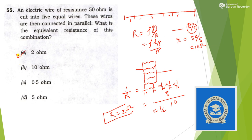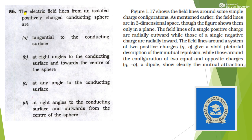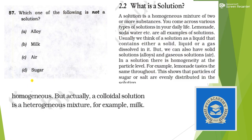Next: electric field lines from an isolated positively charged conducting sphere — this is from class 12 physics. Field lines of a single positively charged object point radially outward, while those of a negatively charged object point inward. For a positively charged sphere, field lines are at right angles to the conducting surface and directed outward from the center. Answer is option B.